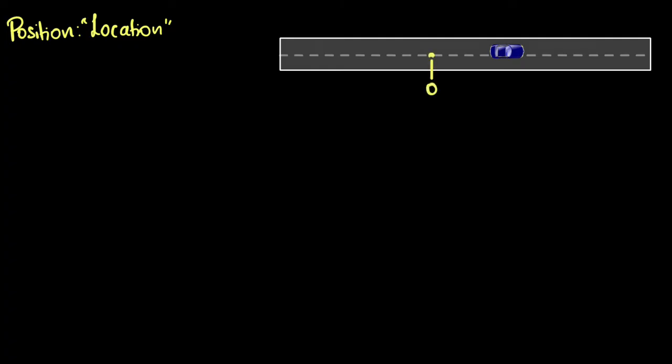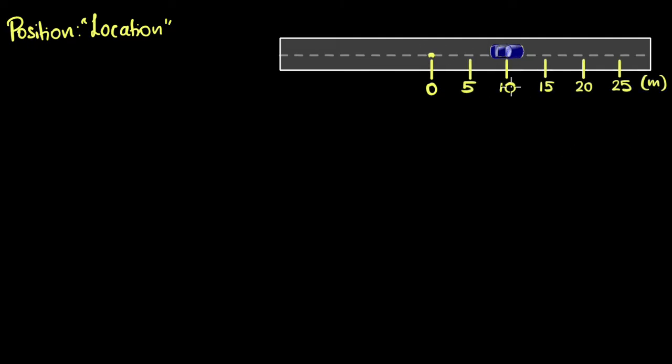How do we measure position? We need a reference point. You always measure the location by measuring how far it is from some reference. We usually call the reference our zero, or origin. So if we measure from here, let's say it turns out to be 10 meters — the position of that car is 10 meters.